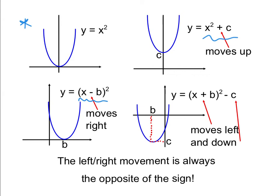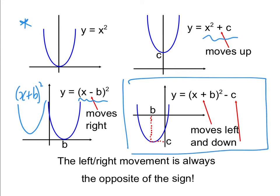When the graph moves to the right, there's a minus B in the bracket. When it moves to the left, that would be an X + B all squared — which is the opposite of what you might think. So if it's moving in the positive direction, a minus goes in the bracket; when it moves in the negative direction, a positive goes in the bracket. The final general form encompasses everything.